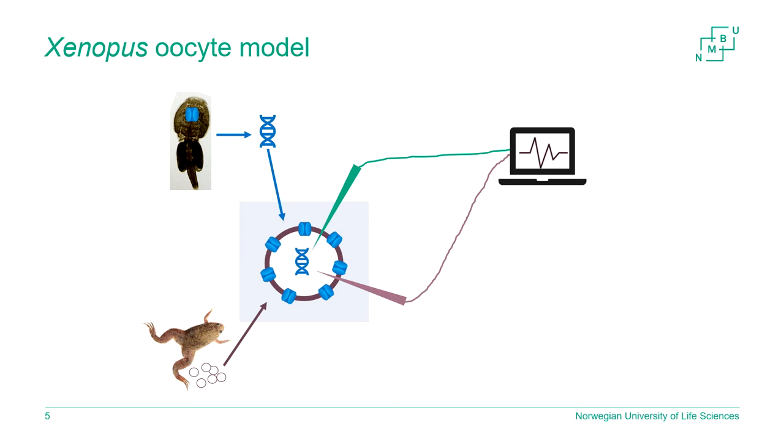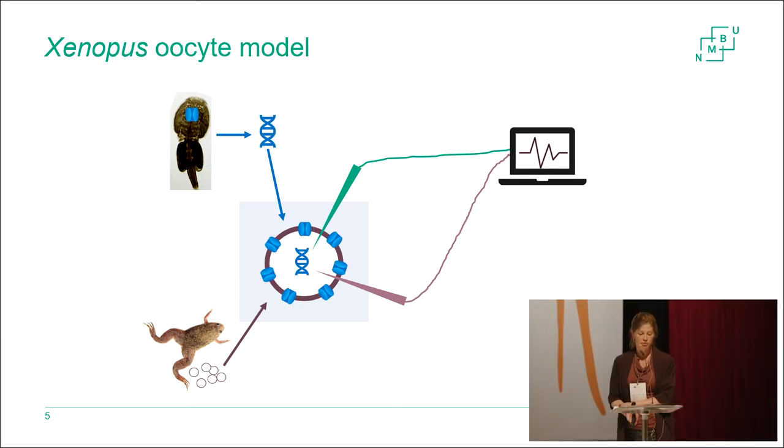This is also the principle behind the Xenopus oocyte model, where the change in voltage is measured from oocytes, the eggs of the African claw frog Xenopus laevis. This is a model system for investigating the electrophysiological properties of specific ion channels from specific species and their response to different stimuli, for example voltage on voltage-gated sodium channels or different ligands to ligand-binding ion channels.